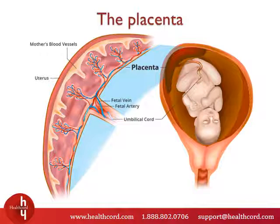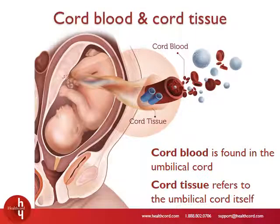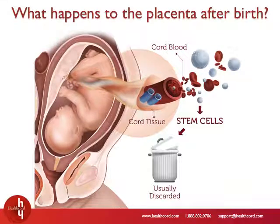You will notice that the umbilical cord connects the growing baby to the mother. The umbilical cord itself has two components: cord blood and cord tissue. Cord blood refers to the blood found within the umbilical cord, and cord tissue refers to the umbilical cord itself. Given that the placenta is a temporary organ that develops during pregnancy, shortly after a baby is born, the body also expels the placenta. In the past, once the umbilical cord was cut, the cord and the placenta were discarded as medical waste.